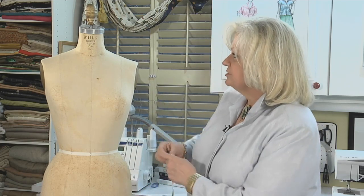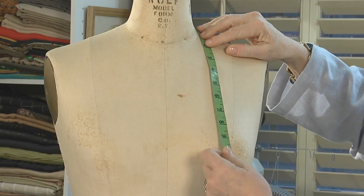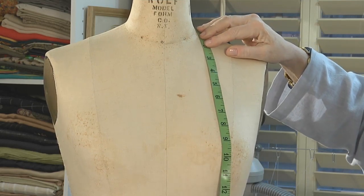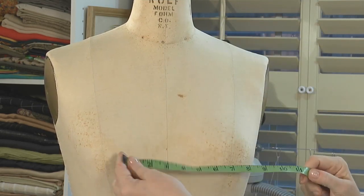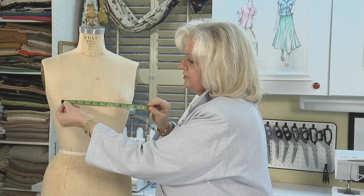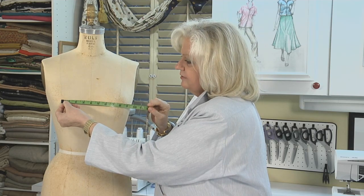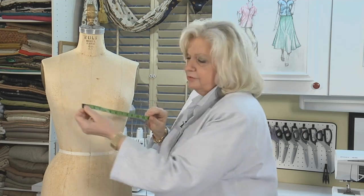First thing you want to do is measure from the shoulder seam down to the bust point, and you want to measure between the apex of the bust points. You're eventually going to use half this width for one of your measurements.